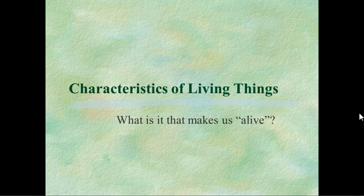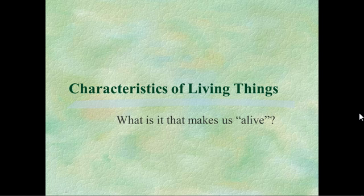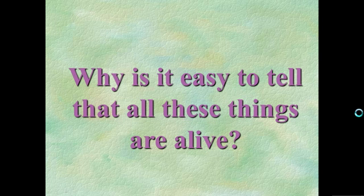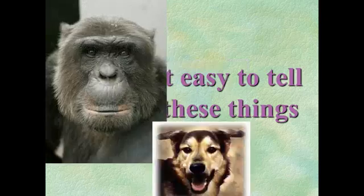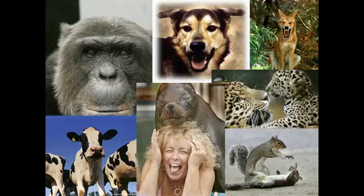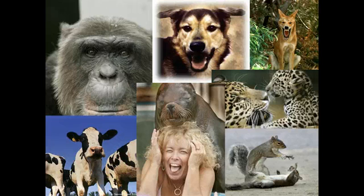Most of the time when we talk about living things, you might think of your dog or cat or things that are familiar to us. We're going to start off by looking at some pictures of things that are alive and thinking about what makes a living thing. When you look at these first set of pictures, I want you to think about why it is easy to tell that all of these things are alive. When you look at pictures of the gorilla, the squirrels, the cows, the dog, the jaguars — they're pretty easy to identify as living things, even though in these pictures they're not moving. We see examples of behaviors that we're familiar with: playing, eating, a mother taking care of its child, and so forth.